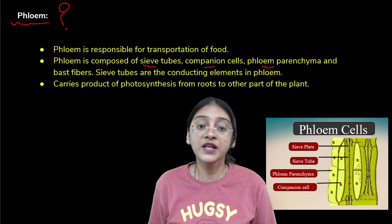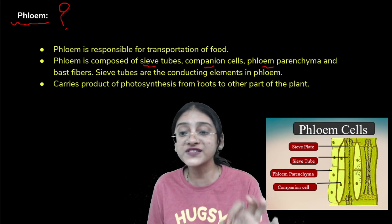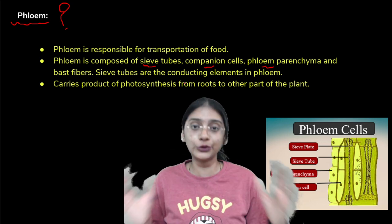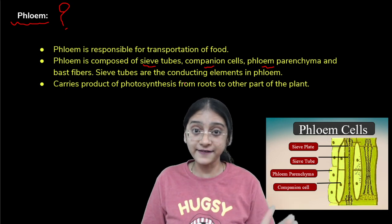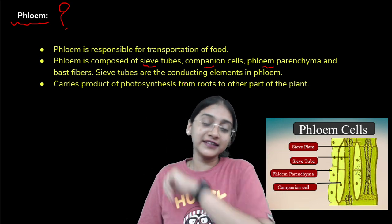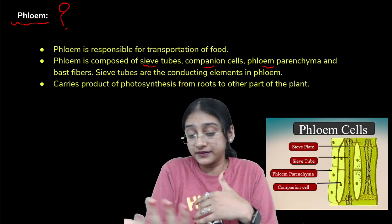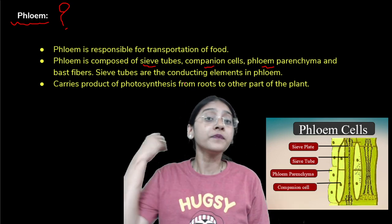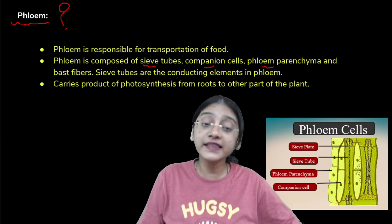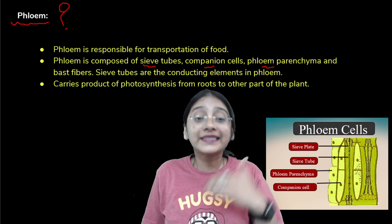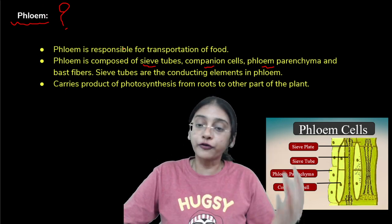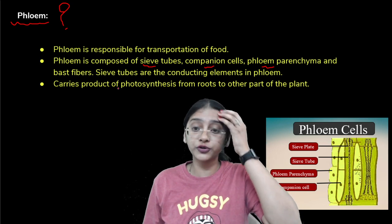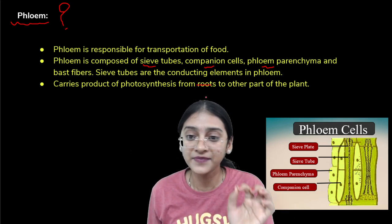Phloem carries the products of photosynthesis from the leaves to other parts of the plant. The photosynthetic product, glucose, is not directly transported in the phloem. Instead, glucose is quickly converted into insoluble starch and then into sucrose, and this sucrose is transported through the phloem to different parts of the plant.